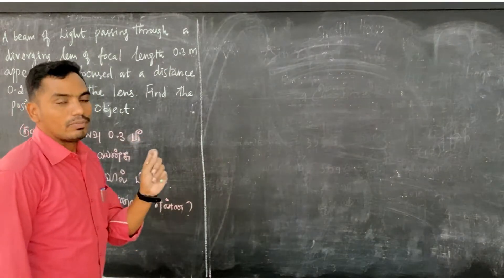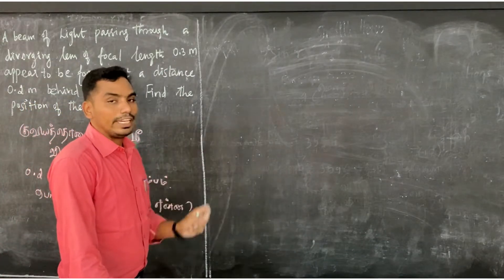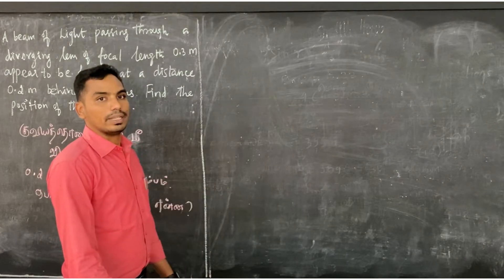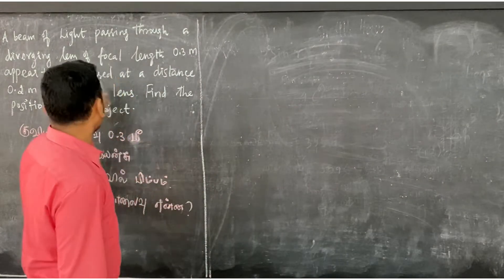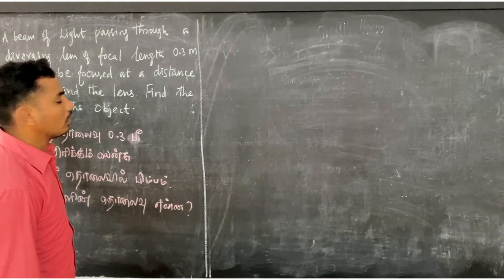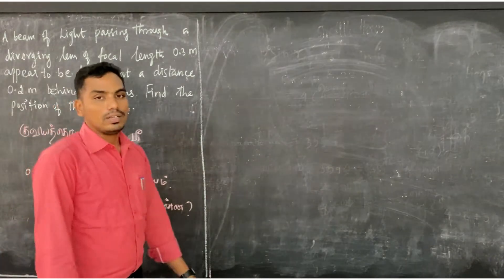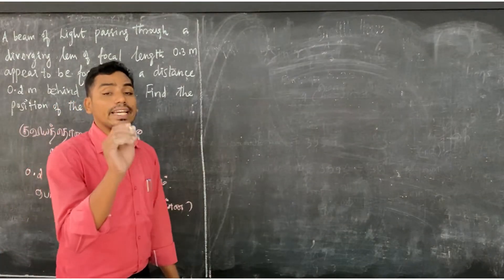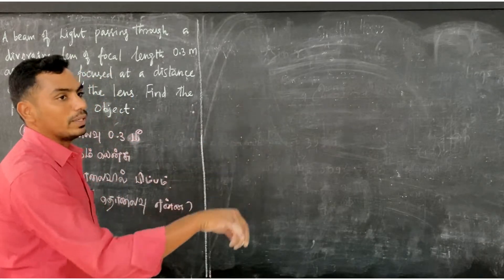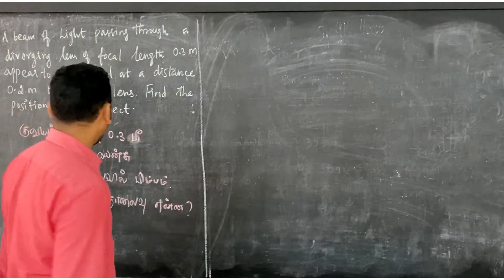The focal length of the lens is given. The image is formed at 0.2 meter.